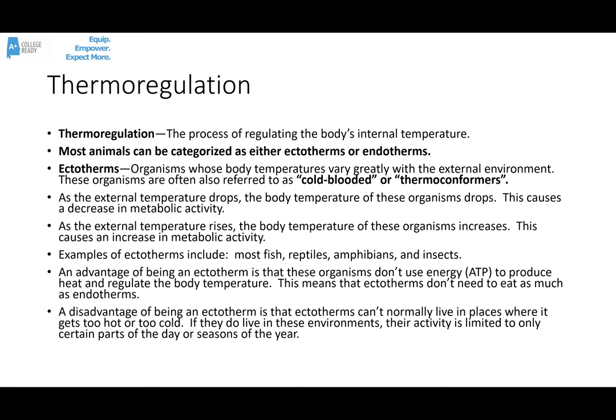Most animals are categorized as either ectotherms or endotherms. Ectotherms are more commonly referred to as cold-blooded, but I would rather you think of them as what we call thermoconformers. Their body temperature can vary greatly with the external environment — they don't control their internal environment. As the external temperature drops, the body temperature drops.